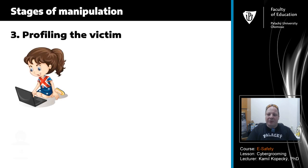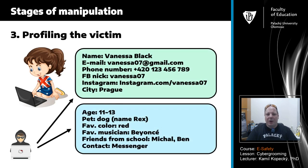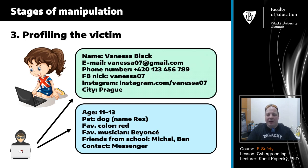The third technique is profiling the victim. One attacker obviously communicates with many children at once, so it's necessary to have a database of personal info about children. This database can include the child's name, email, phone number, Facebook nick, Instagram link, city, age, pet, favorite color, favorite musician, friends from school, and other information used for manipulation in the cyber grooming process.